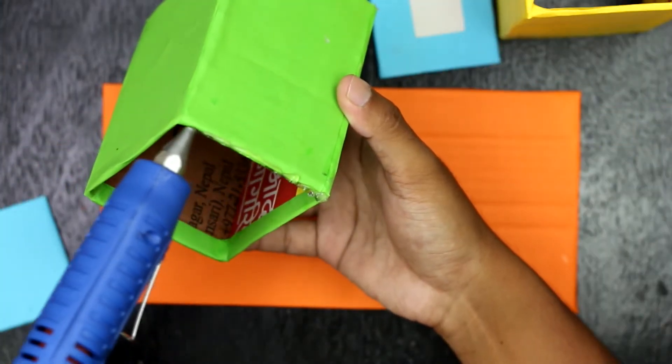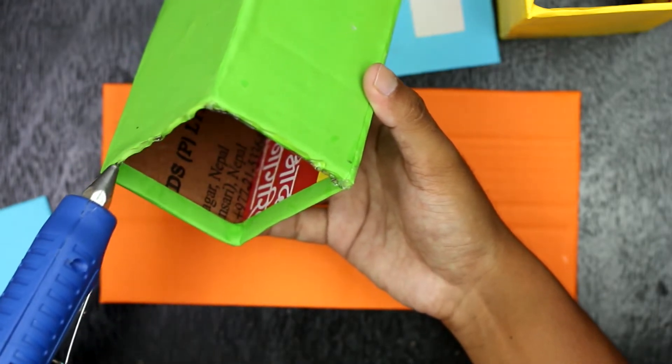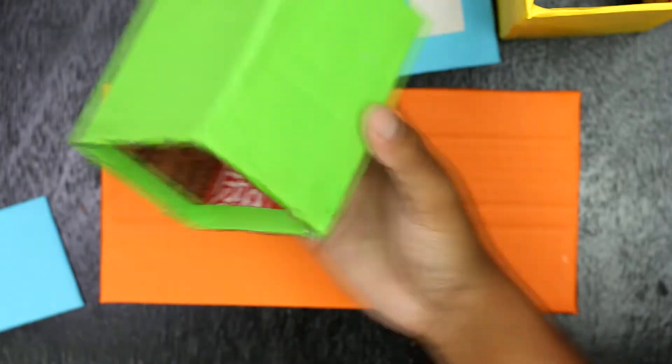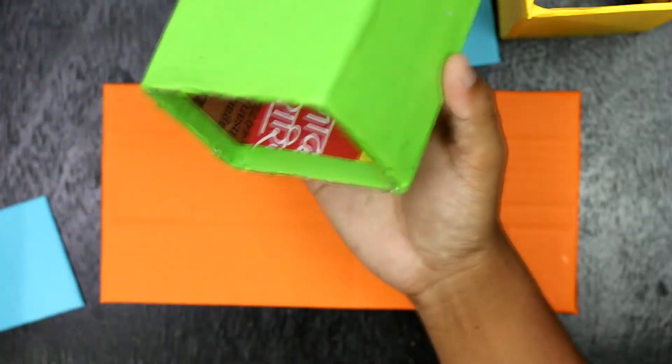Now, it's time to glue both the boxes to the base. To glue the boxes, I have used hot melting glue. You can also glue it by using Fevicol.